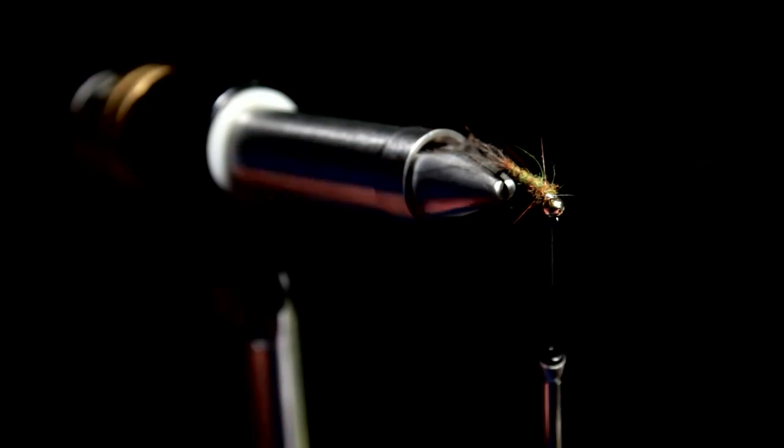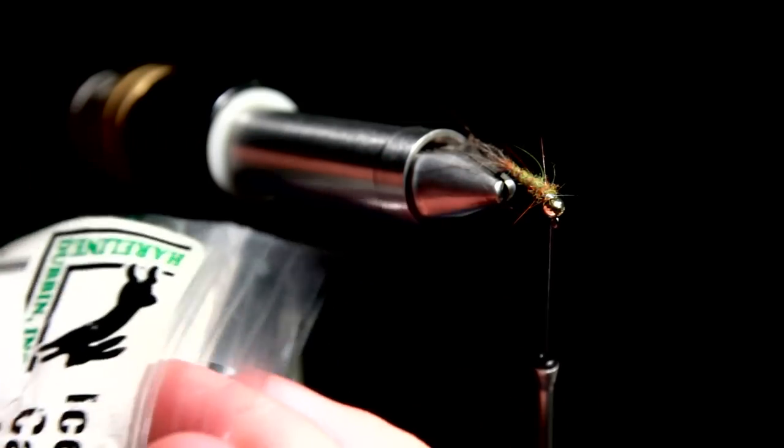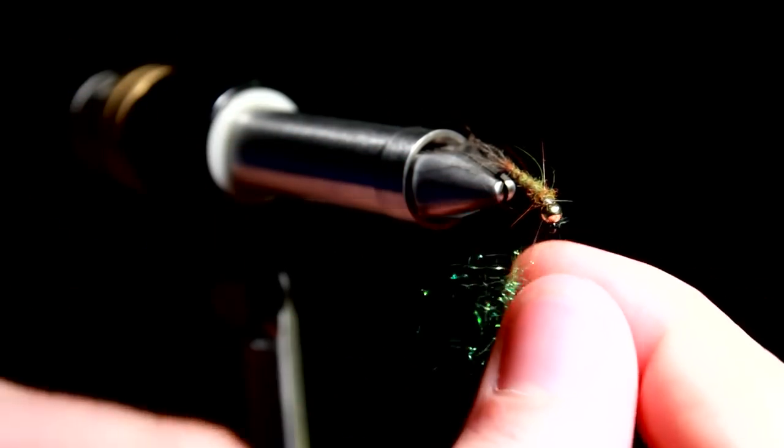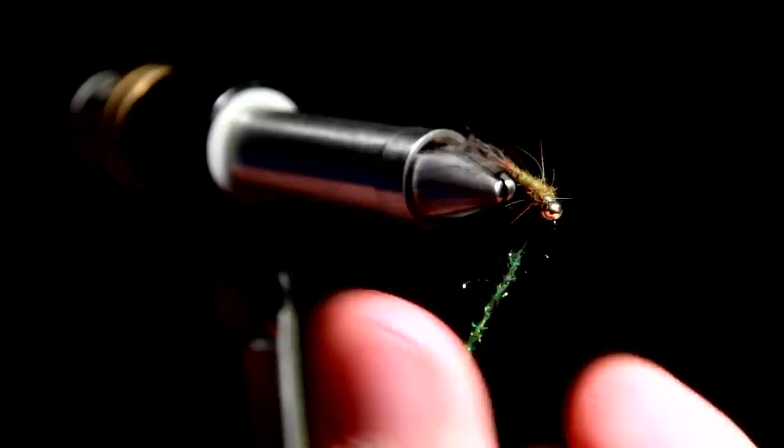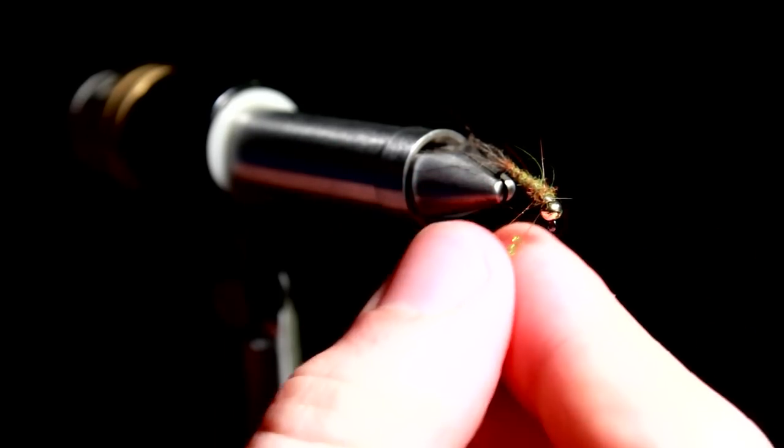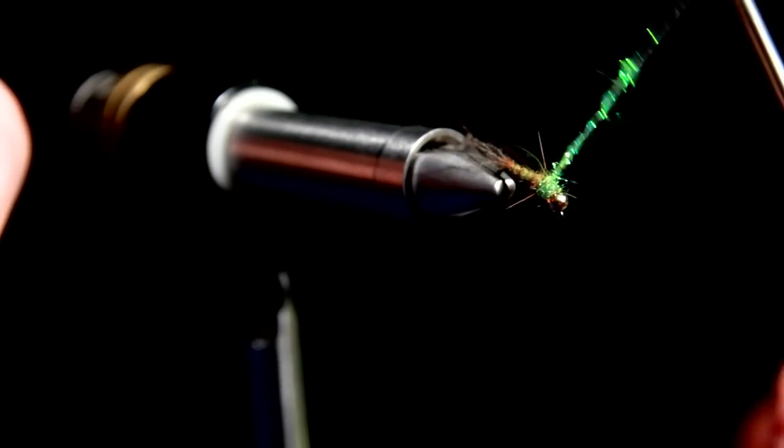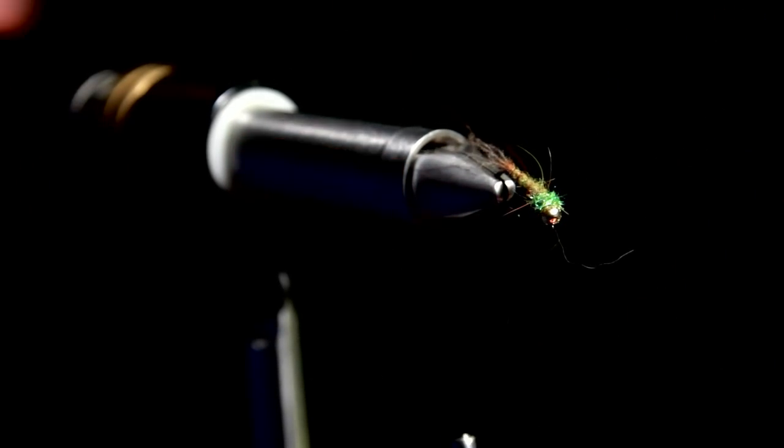Then to complete the fly we wind a thorax. I use some caddis green ice dub. You don't need very much. This might just be a little too much in my opinion. Dub it rather tight. And make the thorax not too long, but you can make it a little more bulky if you wish to. And whip finish.